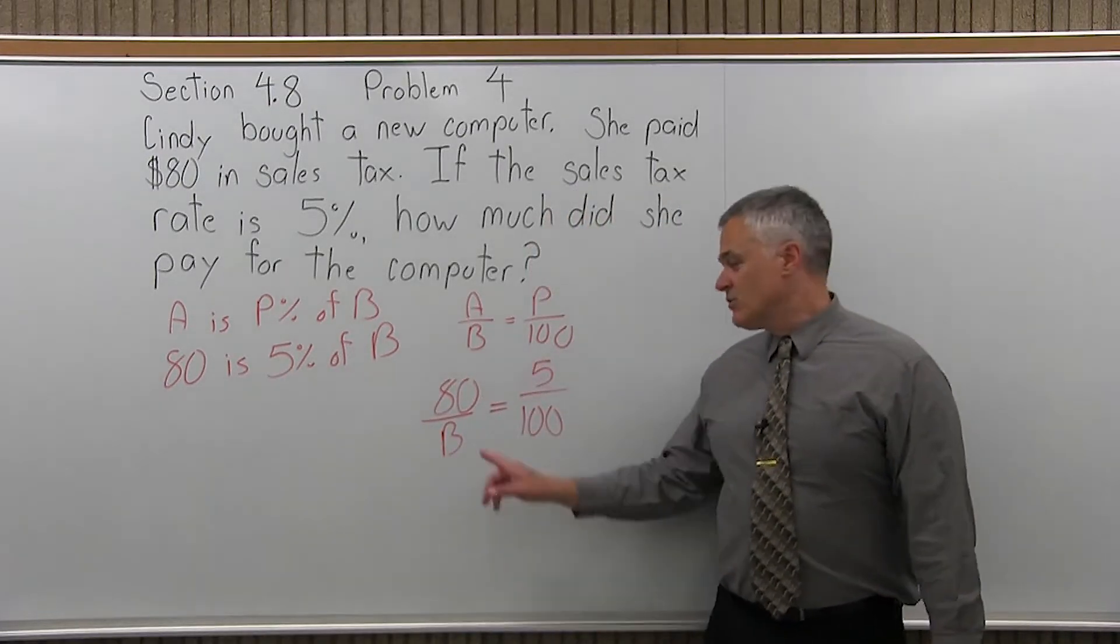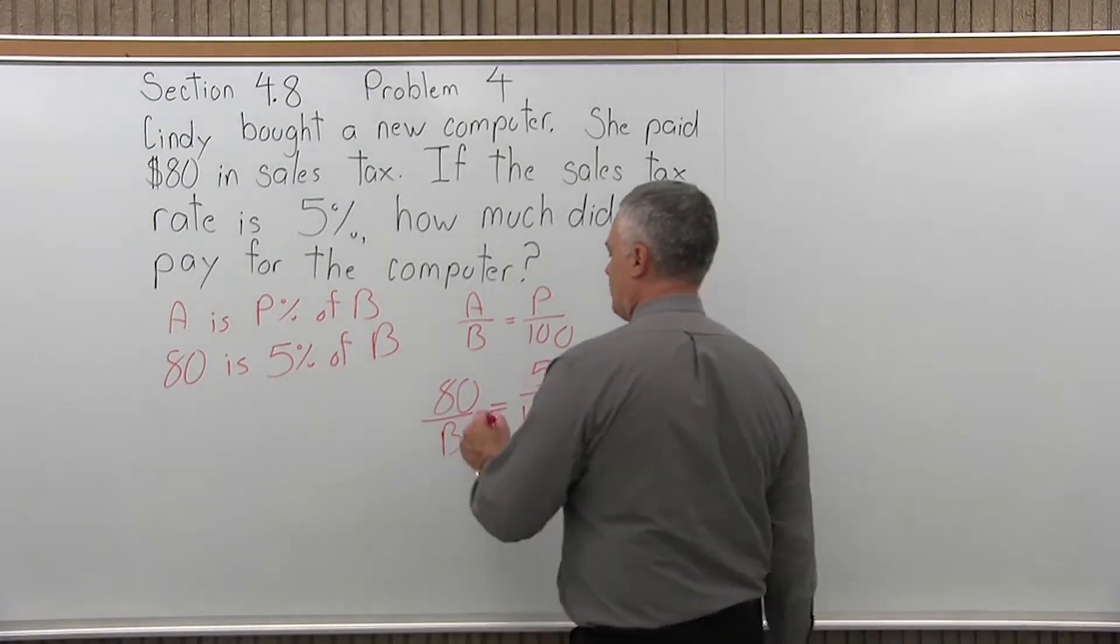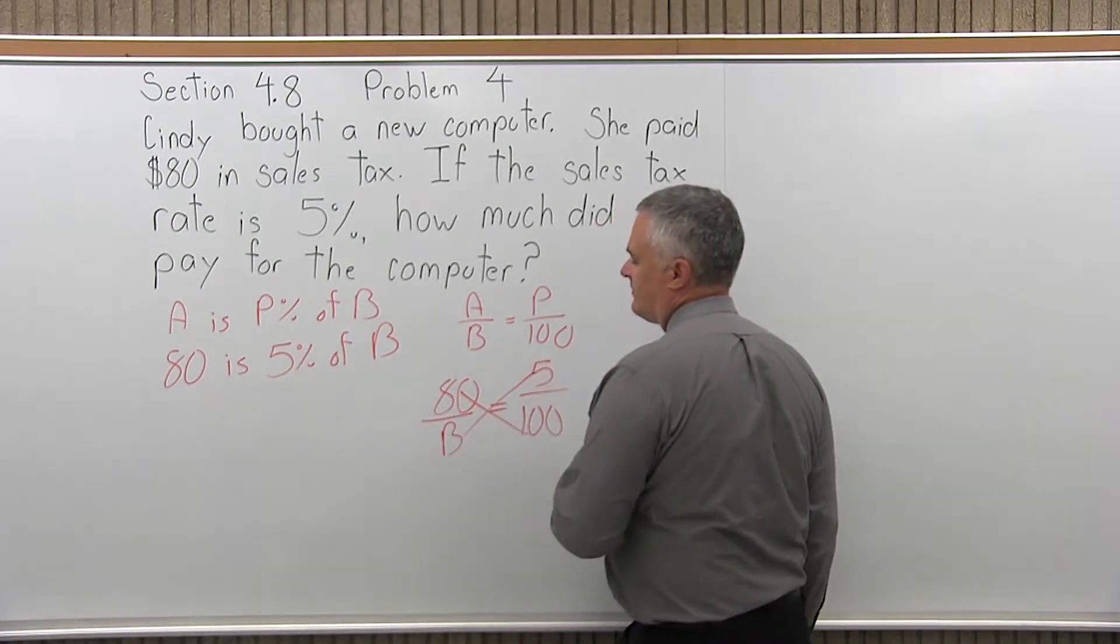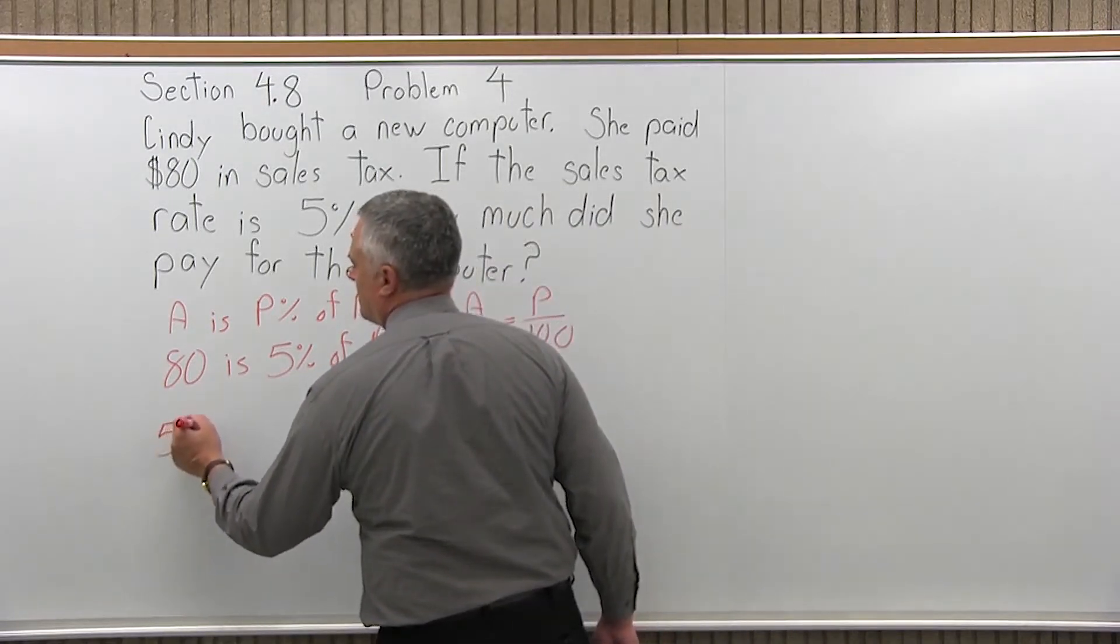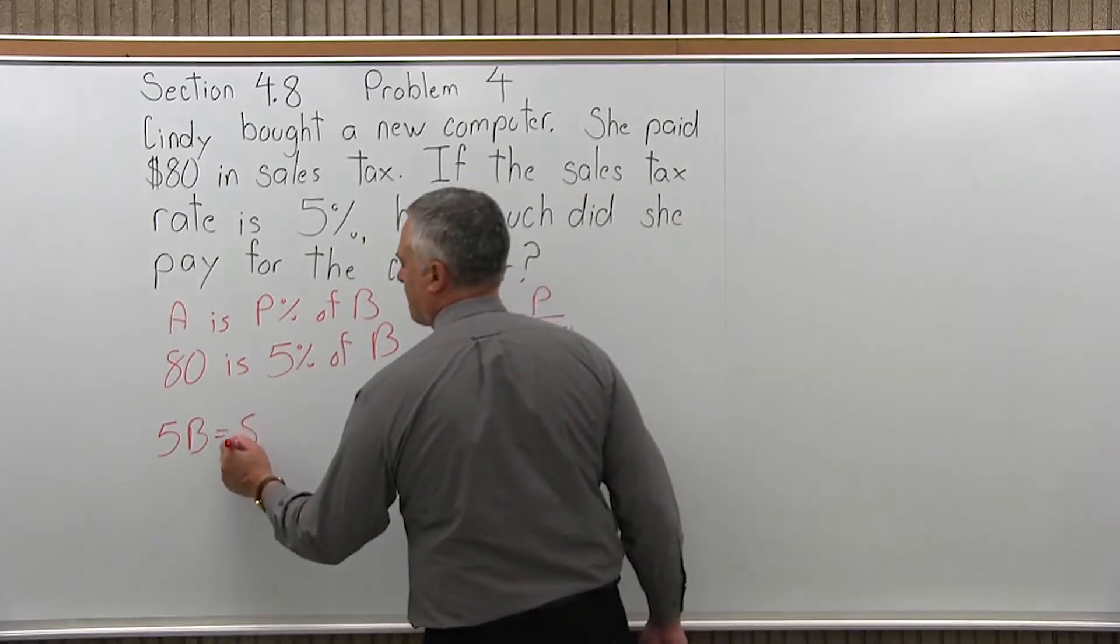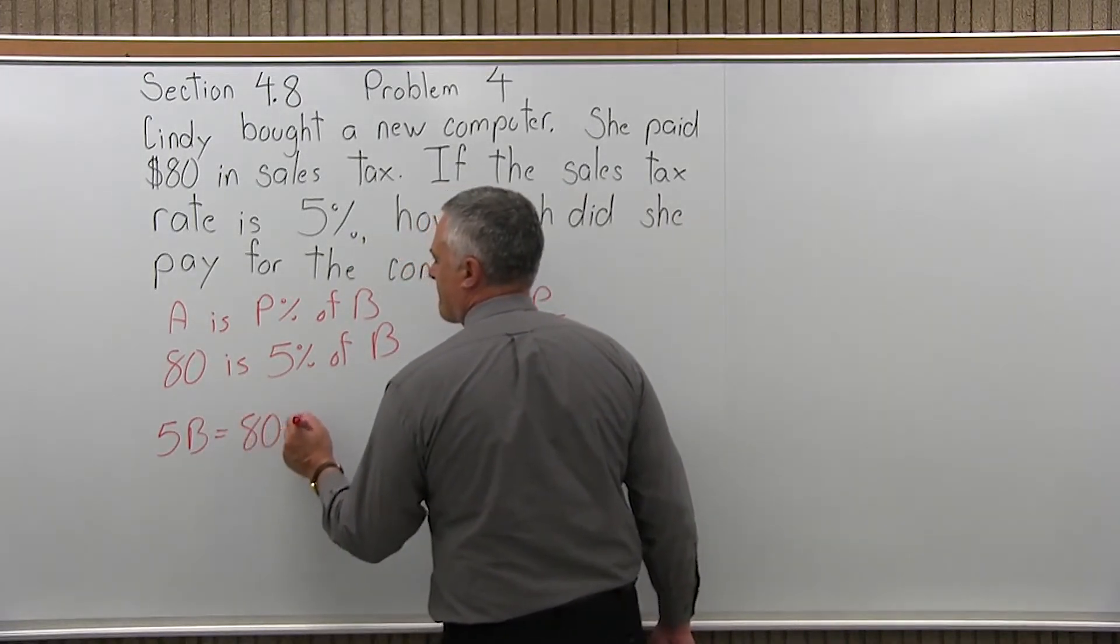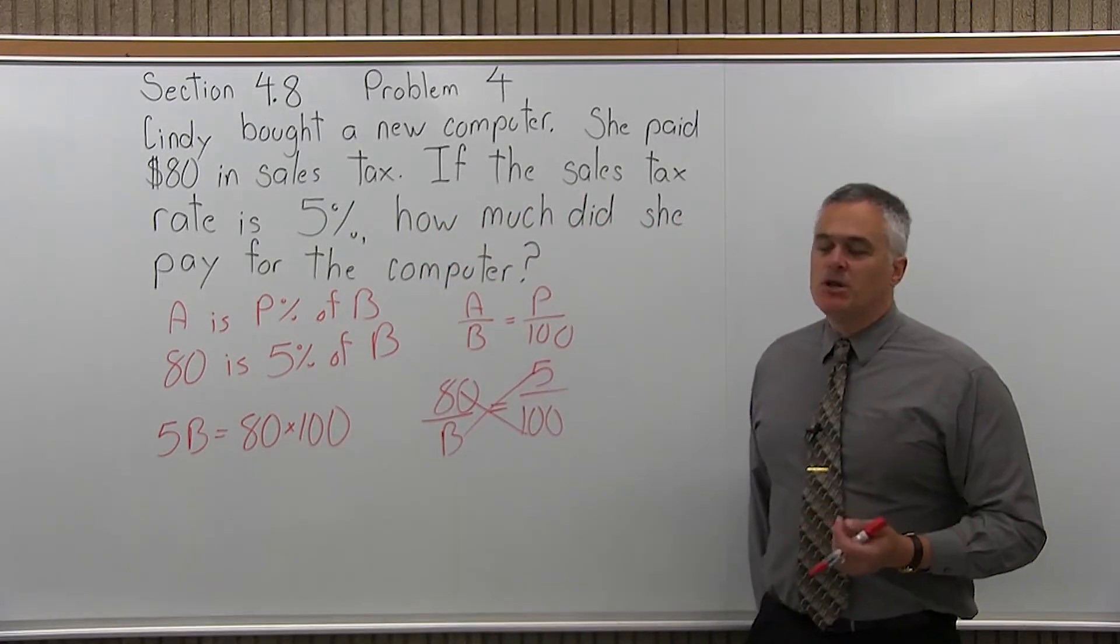So now I have an equation, one unknown value, so I can solve for the unknown, and we'll do that by cross multiplying, and we divide. So, 5 times B will be 5B equals 80 times 100.